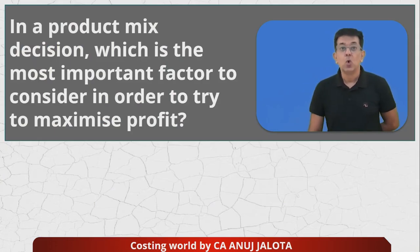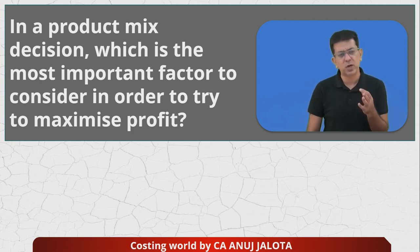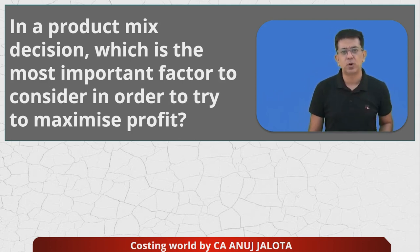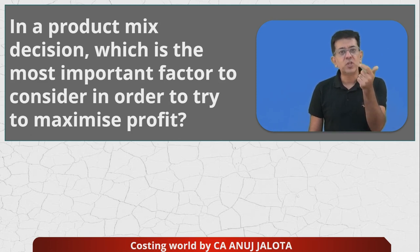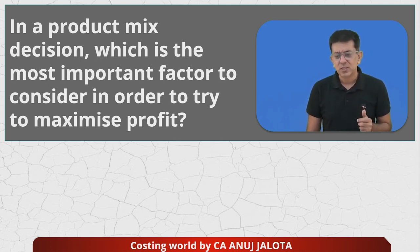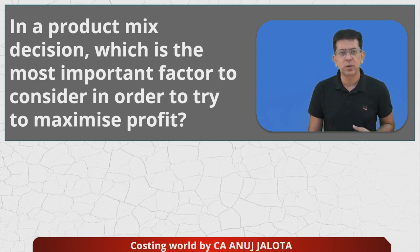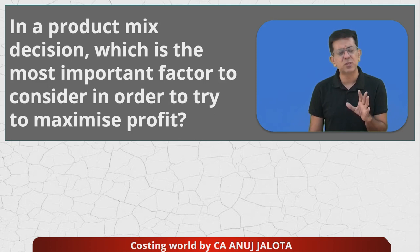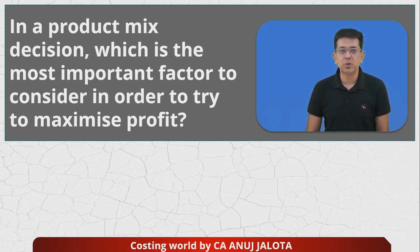In a product mix decision, which is the most important factor in order to maximize profits? First, what do you mean by product mix decisions? These are decisions where a company manufactures more than one product — say X1, X2, X3 — and is thinking which one to produce more and which one to produce less. Usually such decisions are accompanied by a limiting factor, meaning there is something in short supply. So which factor should be considered to get maximum profit? Let's look at the four options.